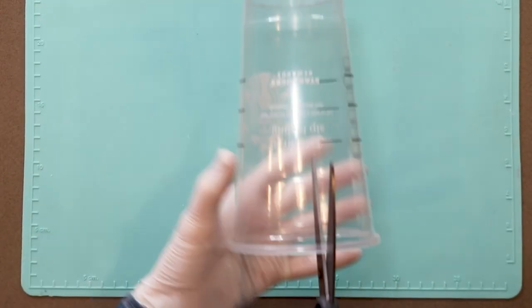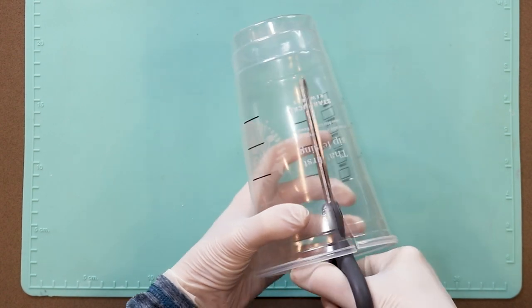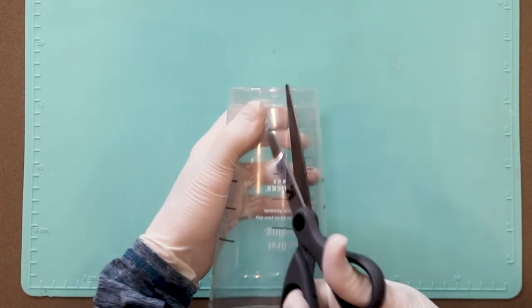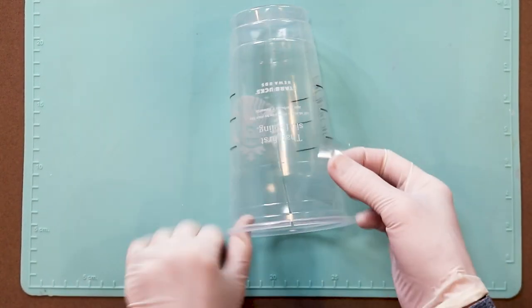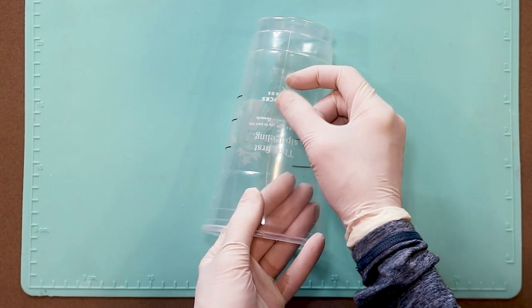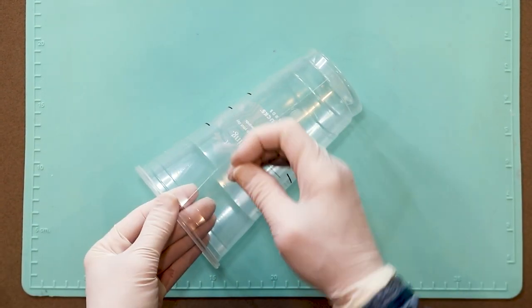To begin, you will need a real Starbucks cup, and I have gotten the largest size of venti. I'm cutting a slit down the side of the cup so that later on, I will have an easier time getting this cup off. Now that I've cut it, I am lightly taping it up so that the chocolate doesn't spill out.